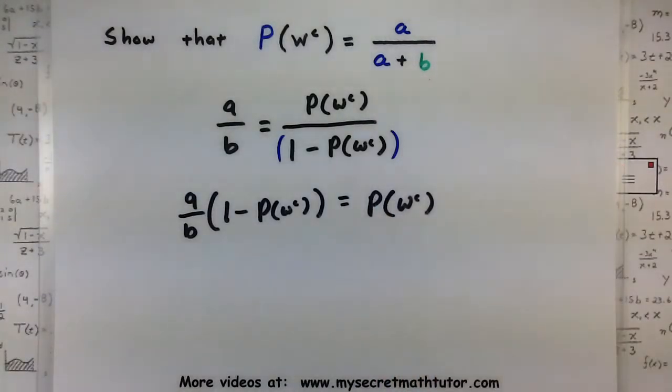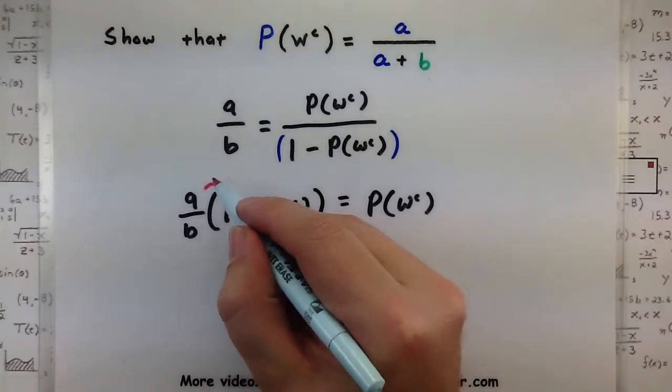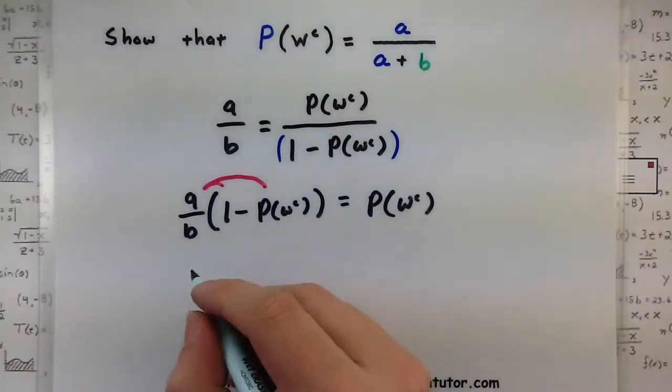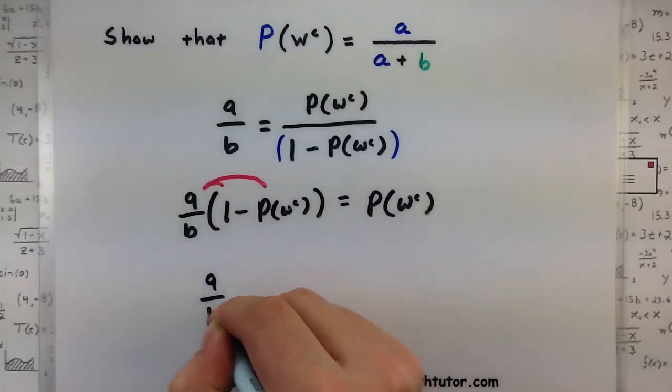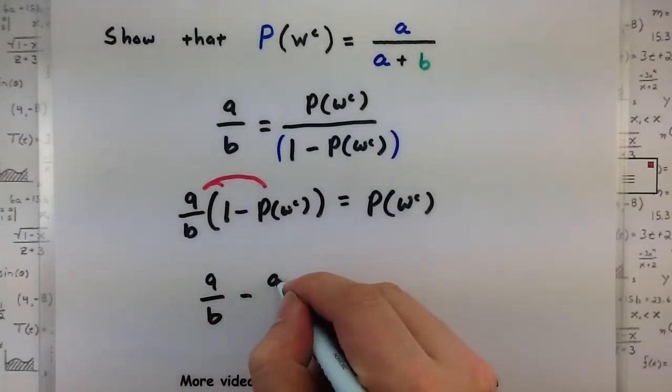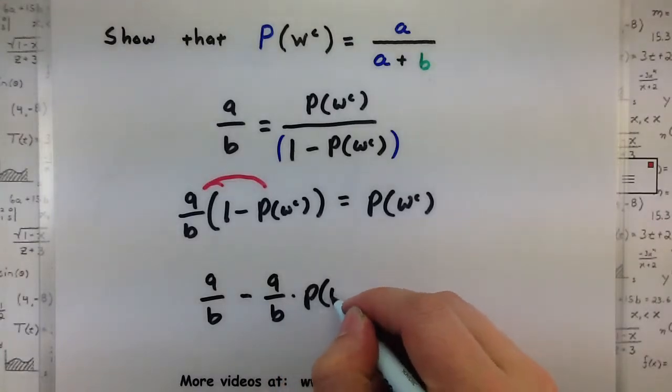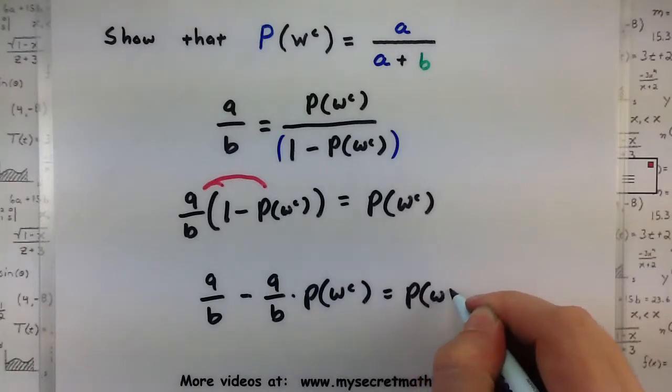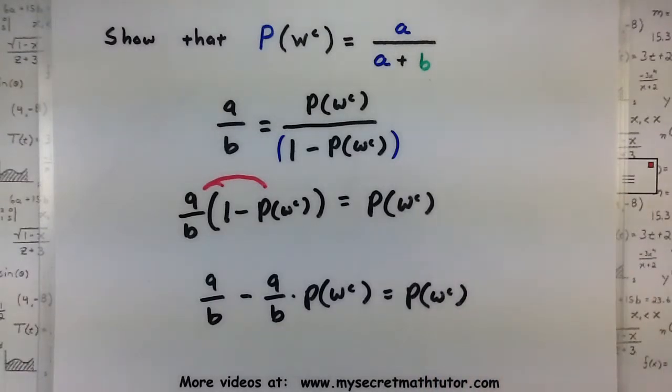So A divided by B multiplied by one minus probability of not winning equals probability of not winning. So I'm trying to solve this, trying to get them together. And this guy is stuck inside parentheses. I can free it by distributing through by this A/B.